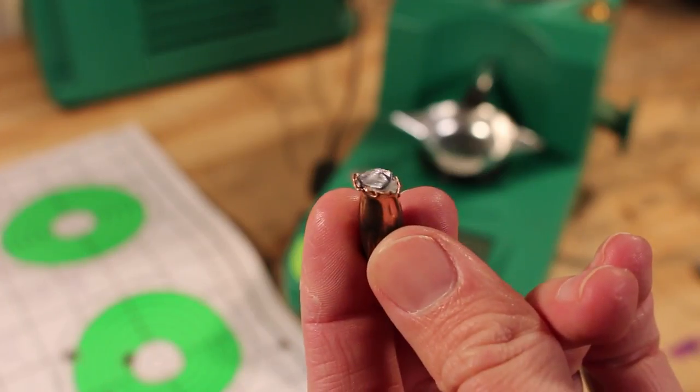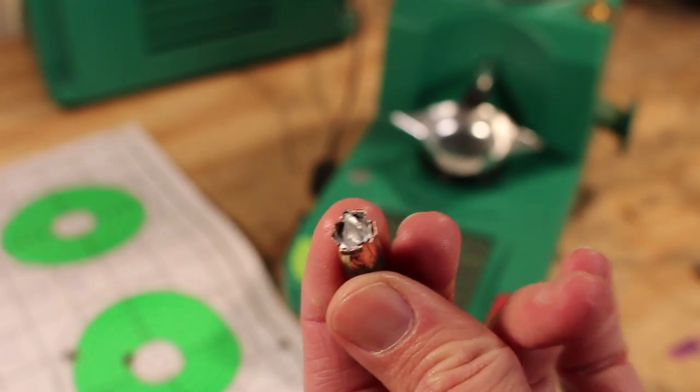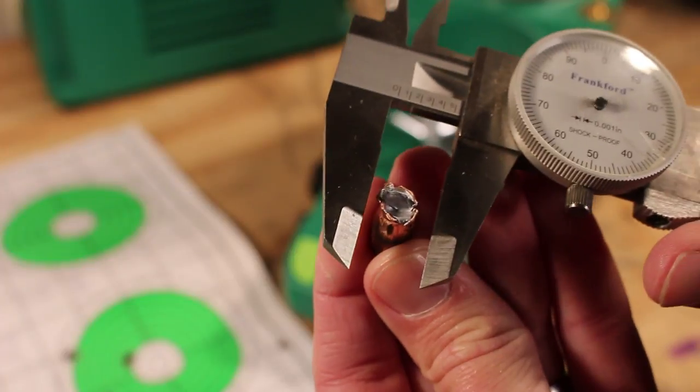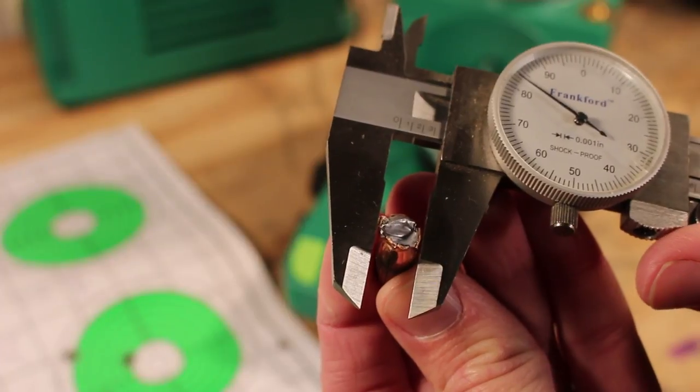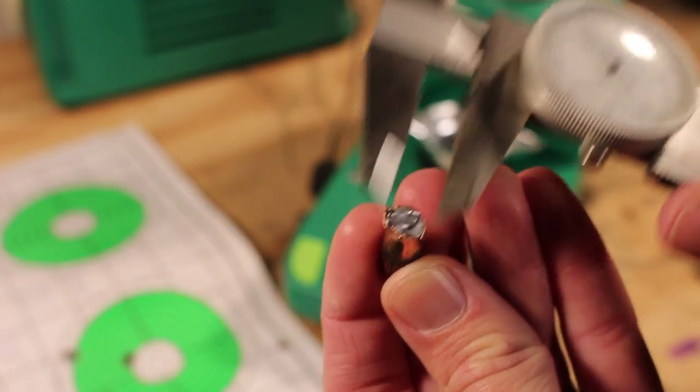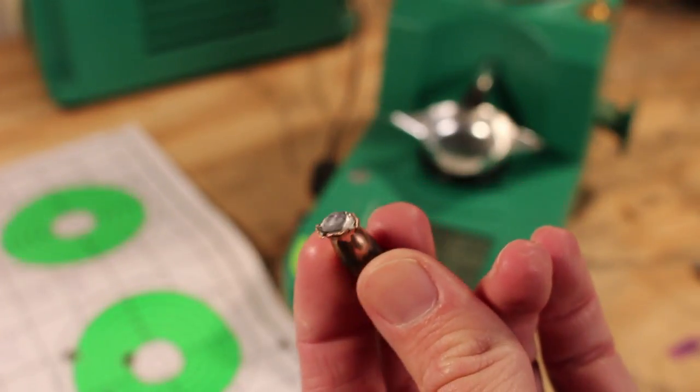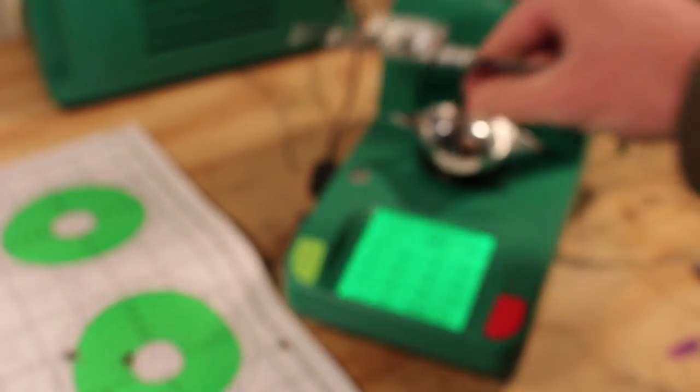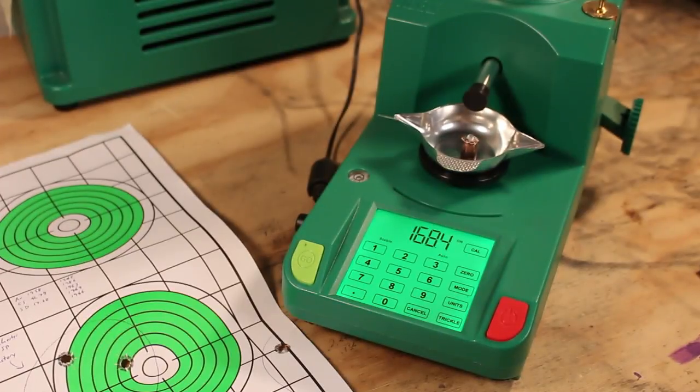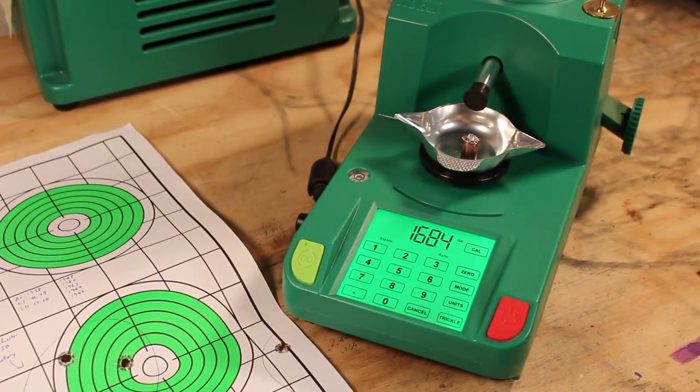The 170 grain Hornady, as you can see, has mushroomed and created some pretty wicked cutting petals. So we're looking at a maximum width of about 0.385, 0.380, somewhere in there. Let's see how much retained weight we have. 168.4. So of the 170 grains, we just lost a tiny bit of copper or maybe a tiny bit of lead. And that's about it.